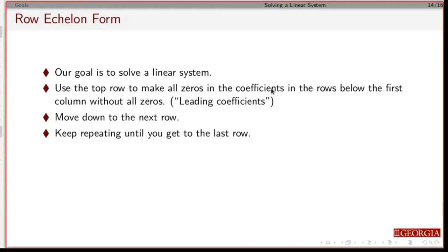The idea is you first start with the top row. You find the leading coefficient that's not zero, make all zeros in columns below it, and you start repeating that from the second row, third row, fourth row, and you keep doing that over and over.